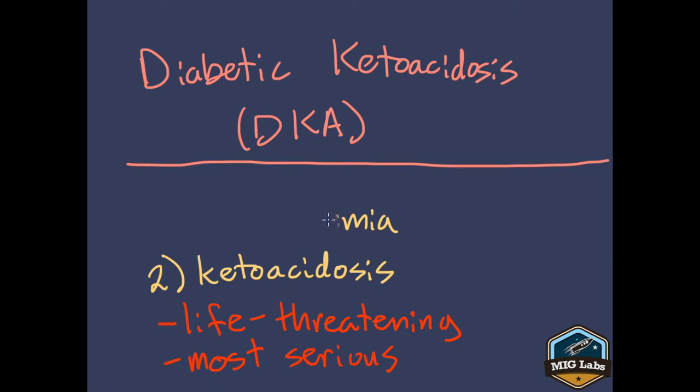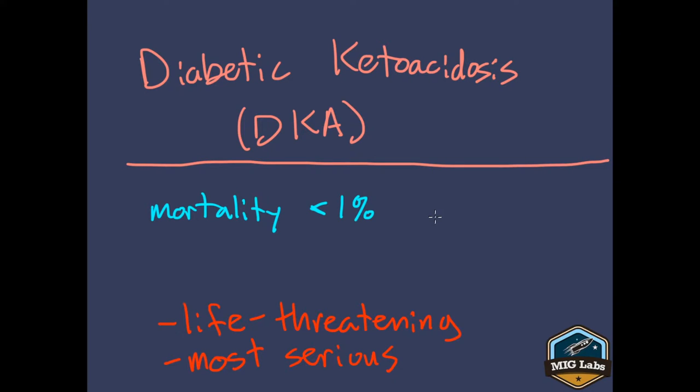DKA can absolutely kill someone if it's left untreated. In fact, it's even been called the most serious of the diabetic complications or the diabetic emergencies. Now the good news is that DKA is absolutely treatable. When treated properly, DKA has a mortality of less than 1%. However, it's on the rise. In approximately the last 20 years, we've seen almost a doubling in the number of patients who are admitted to hospitals for DKA.